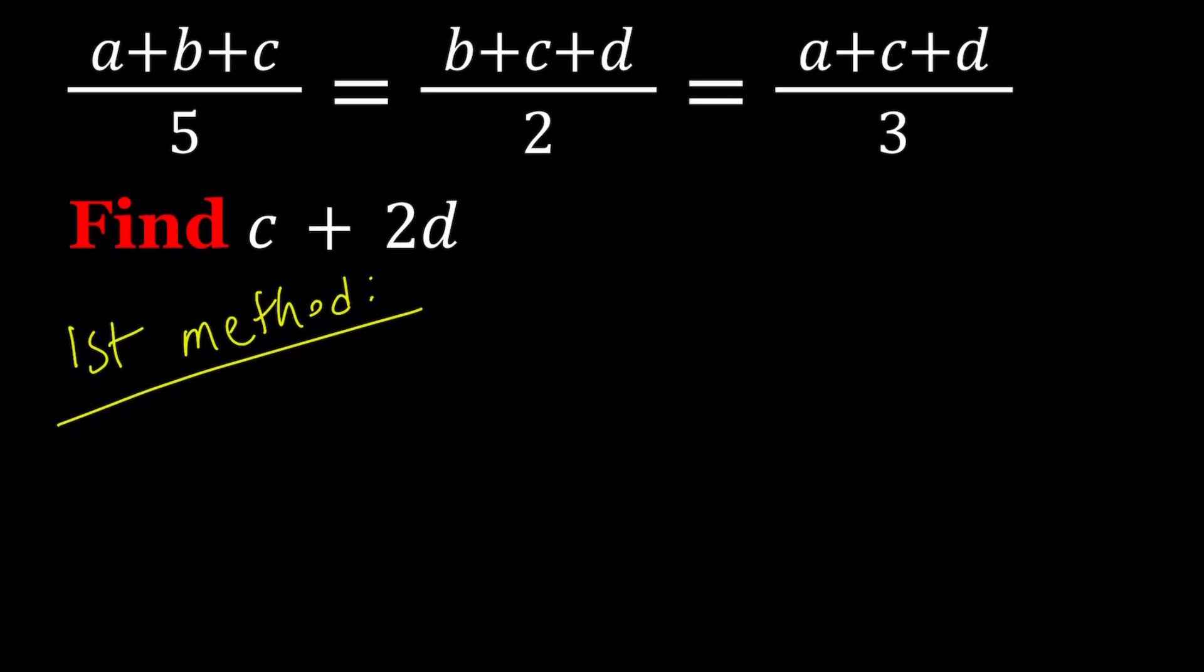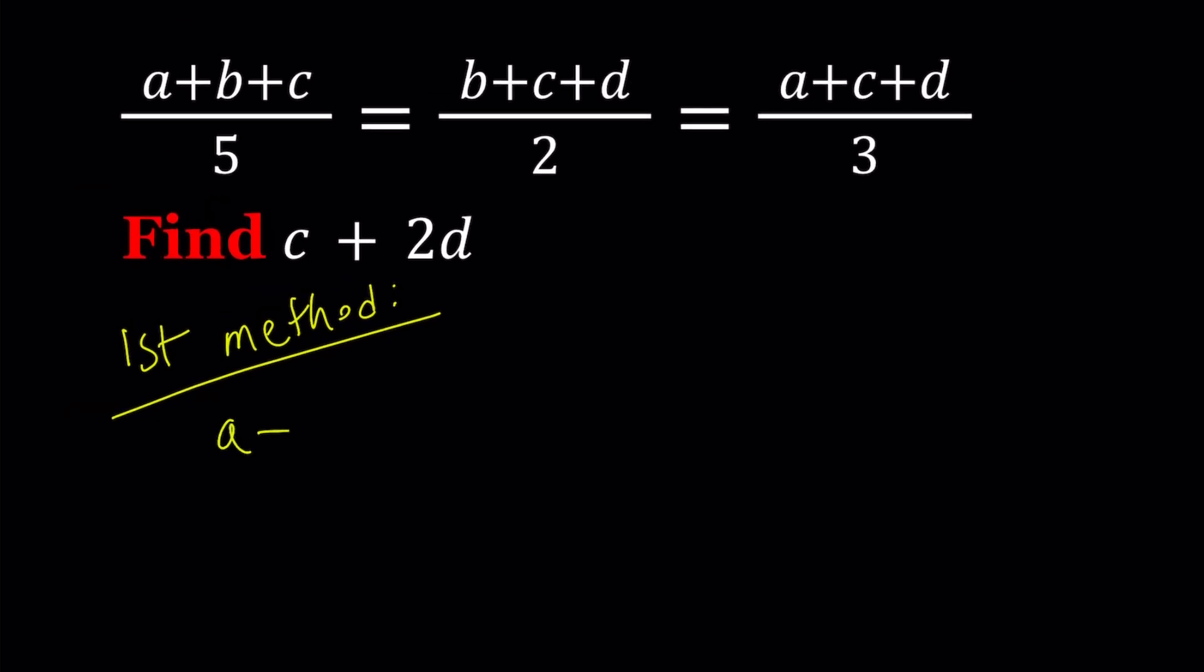Since these are equal to each other and this is commonly used with ratios and proportions, if three ratios are equal like this, I can set them equal to a constant. Because this is always true for different values of a, b, c, d, so the ratio is always a constant. Let's go ahead and set it equal to k.